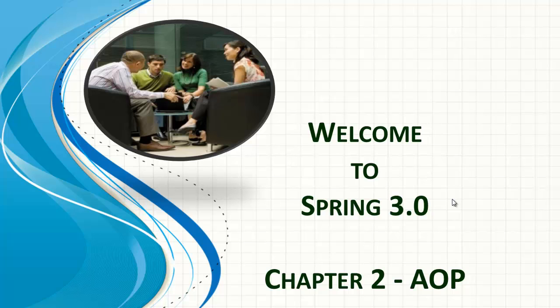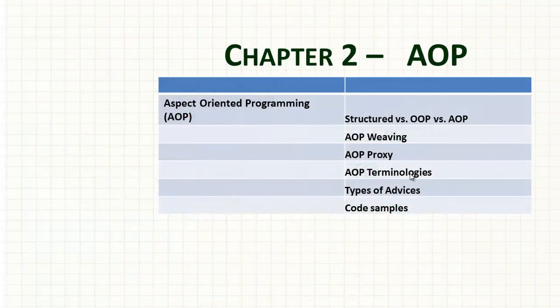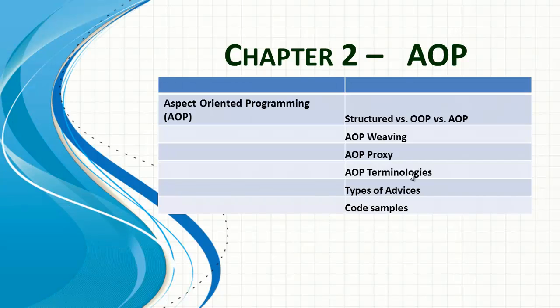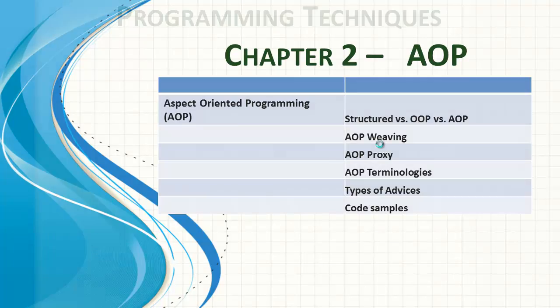Hello and welcome to Spring 3.0 training. This is Chapter 2: Aspect Oriented Programming. Let's quickly run through the content of this chapter. We need to understand what aspect oriented programming is, we'll look at AOP weaving, how AOP proxying works, AOP terminologies like join point, point cut, and advice, the types of advices, and finally some code samples.